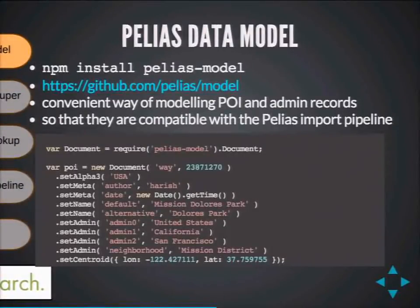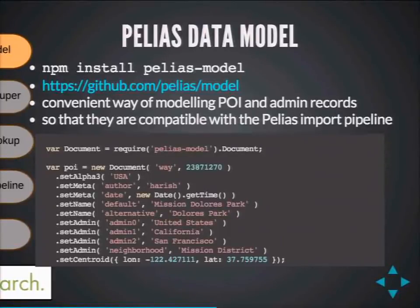Once you create your index, you run your data through the data model — a convenient way of modeling POIs and admin records. It has setters and getters to neatly add name, lat/long, and any additional information to the document. The Pellius model is still evolving; we recently added a 'pop score' — a popularity score calculated at index time — which is useful when ranking search results based on a document's own popularity.